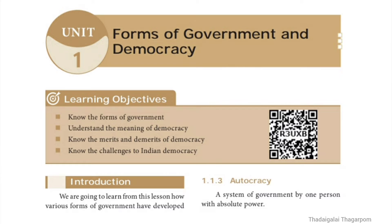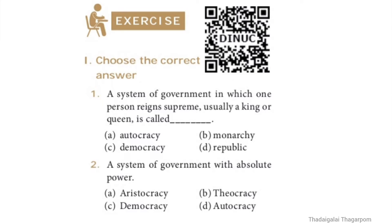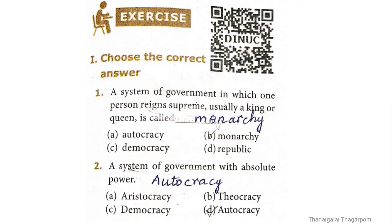9th standard Social Civics Unit 1: Forms of Government and Democracy - book back exercise. Choose the correct answer. First question: a system of government in which one person reigns supreme, usually a king or queen, is called what? The answer is option B: monarchy.